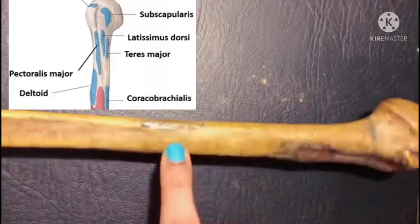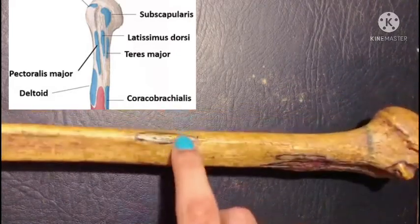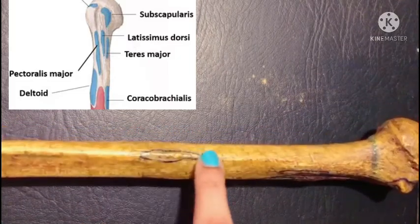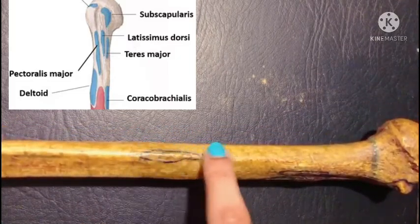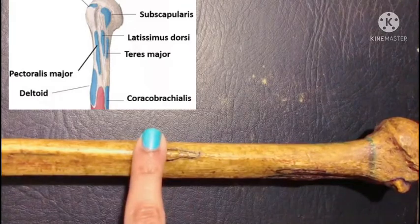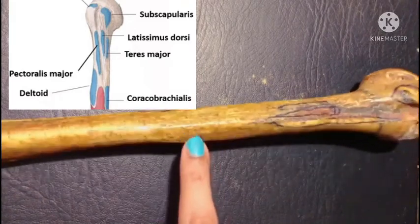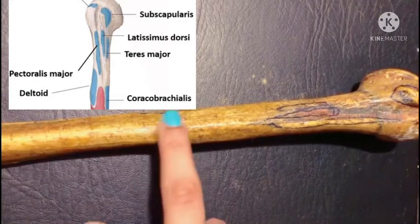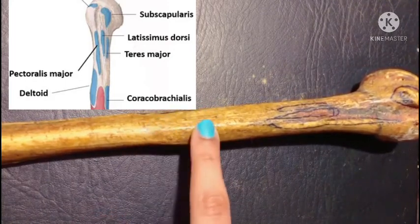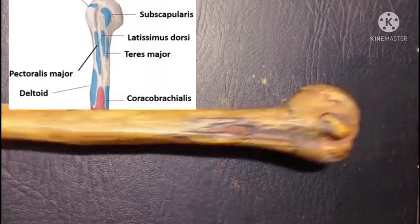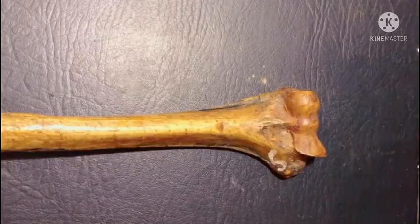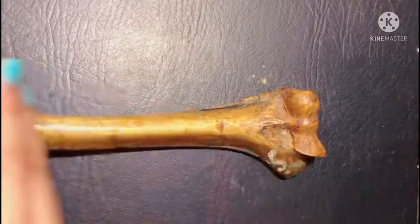Moving on, C and D: C is for coracobrachialis, inserted on the impression formed on the medial border of the humerus. D is for deltoid, inserted into the V-shaped deltoid tuberosity on the anterolateral surface of the humerus. That was all about the insertions. The origins of this bone are mostly in the lower part.